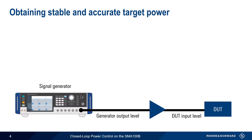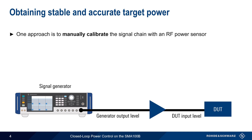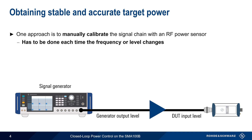There are several approaches to this issue. The first is to manually calibrate the signal chain using an RF power sensor. The DUT is temporarily replaced by the sensor in order to determine the appropriate offset to be entered on the generator. The greatest disadvantage of this approach is that it has to be performed every time the frequency or the level of the generator is changed.